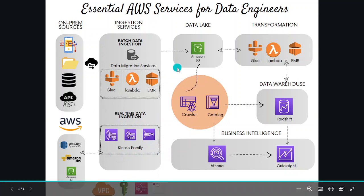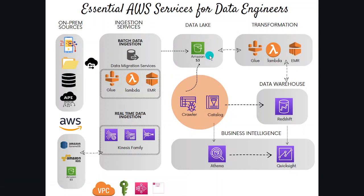Once we store the ingested data into S3, which is our data lake — S3 is the fundamental storage service that allows us to store and retrieve data of any size — we store the raw data and then process it using Lambda, Glue, or EMR with some business rules. S3 can have multiple layers of data: raw, processed, and aggregated, also known as the bronze, silver, and gold data layers. We can store the processed data back into the data lake or into Redshift.